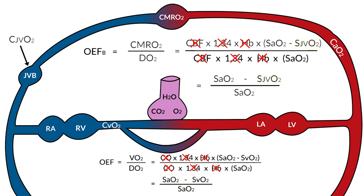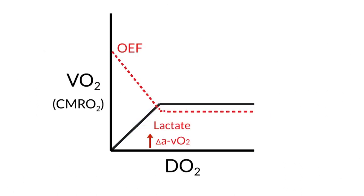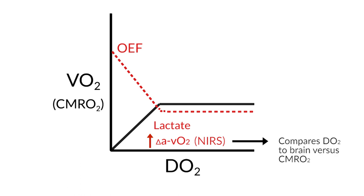Now, in clinical practice, we don't measure the oxygen content in the jugular venous bulb. Instead, we use a surrogate that contains a lot of caveats, and that surrogate is near-infrared spectroscopy — your NIRS monitor. If you're concerned about delivery versus consumption to the brain, then NIRS is typically what we would use.